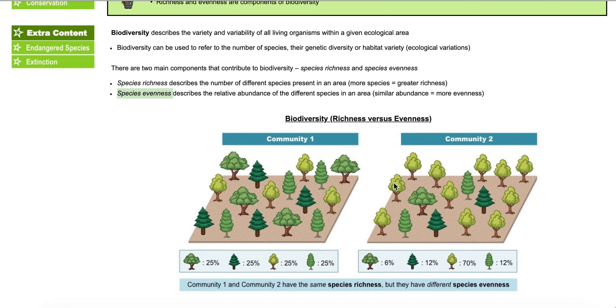So in this case, just describing them, community one and community two are both species rich, because they both have four species, but they are not even. So community two would overall be more healthy because it has, I'm sorry, community one would be more healthy overall because it is more even than community two.